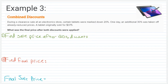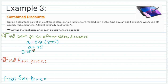Alright, we're going to take a look at one more example which involves combined discounts. During a clearance sale at an electronics store, certain tablets were marked down 20%. One day an additional 30% was taken off the already reduced prices. A tablet originally sold for $375. What was the final price after both discounts? First, we find the sale price after the 20% discount: 0.20 times $375 equals $75 off. So $375 minus $75 equals $300. Or in one step, 0.80 times $375 equals $300.